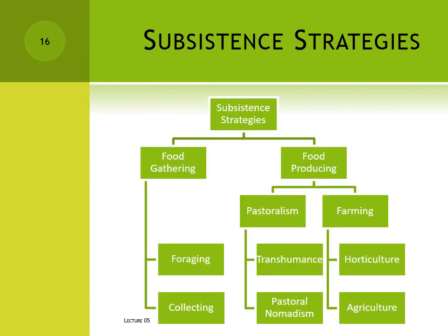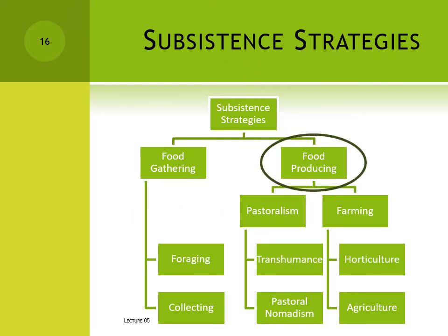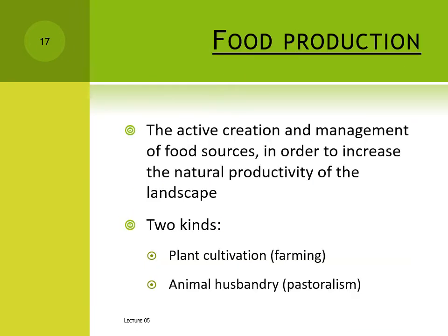If your subsistence strategy isn't food gathering, it's food producing. Food production is the active creation and management of food sources in order to increase the natural productivity of the landscape. There are two broad kinds of food production: plant cultivation and animal husbandry. Subsistence strategies that focus on plant cultivation are called farming, and those that focus on animal husbandry are called pastoralism.